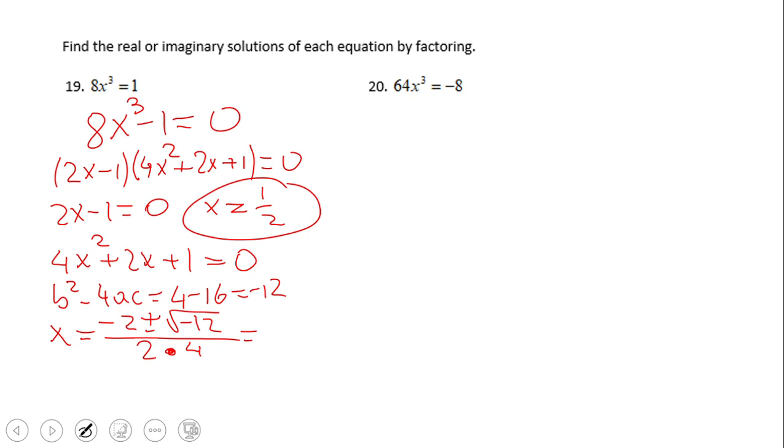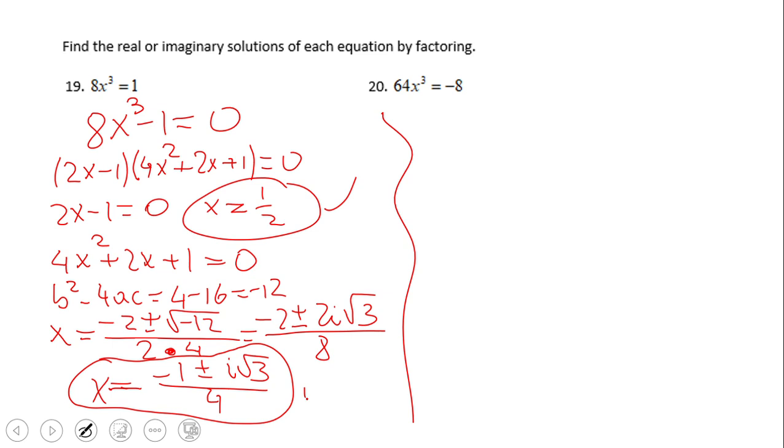One simplification here, and I will do negative 2 plus or minus 2i square root of 3, right? Square root of negative 12, and 2 times 4 is 8. And again here we notice a bunch of 2s - I mean two 2s and the 8 - we can simplify by 2, and we have negative 1 plus or minus i square root of 3 over 4. These are the two complex solutions that come in pairs, and this is the real one.